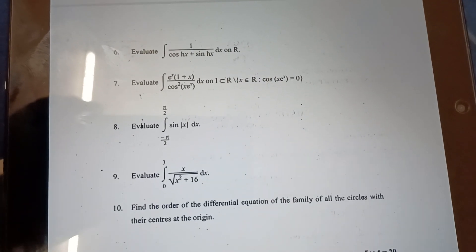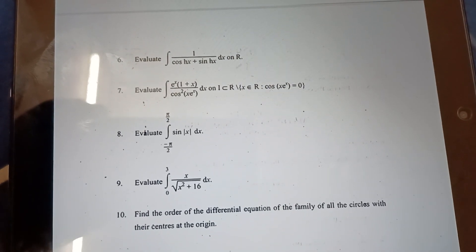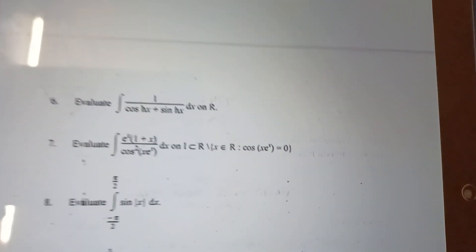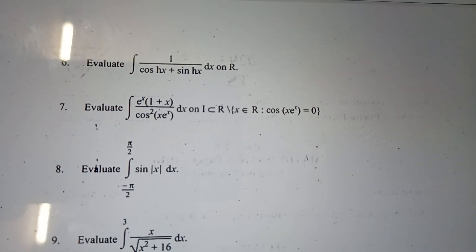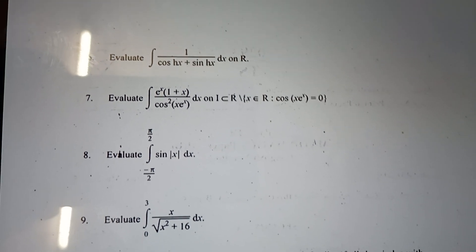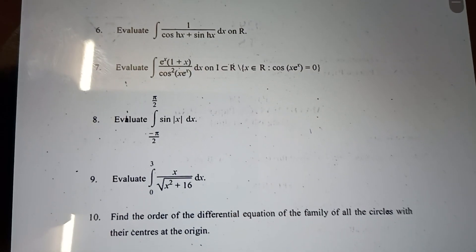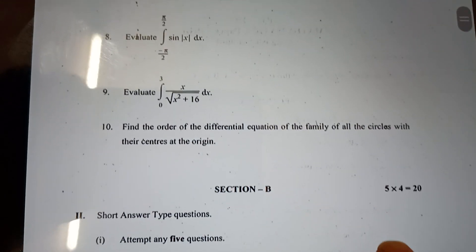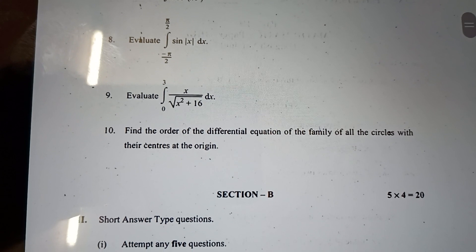Evaluate the integration of cosh(x) + sinh(x). Integration of e^x(1 + x) by cos²(e^x(1 + x)) divided by cos²(x) × e^x. Evaluate integration from -π/2 to π/2 of sin|x| dx. And 0 to 3, x by √(x² + 16) dx.